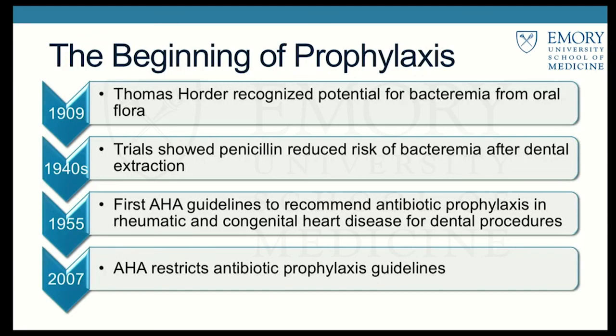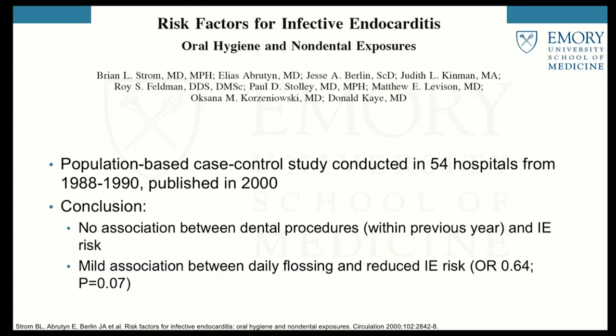Thomas Horder was a British physician who first discovered that bacteremia could occur from oral flora. In the 1940s, multiple trials showed that penicillin reduced the risk of bacteremia after dental extraction. So in the 1950s, AHA released guidelines recommending antibiotic prophylaxis, with subsequent updates recommending oral and IM prophylaxis for both moderate and high-risk patients undergoing procedures including GI and GU procedures. This was the standard of care for about 50 years until 2007, when AHA restricted antibiotic prophylaxis.